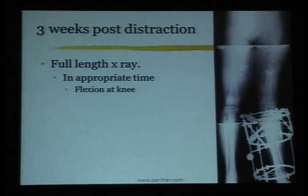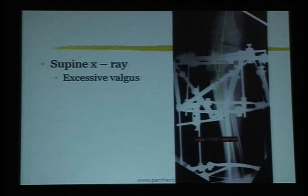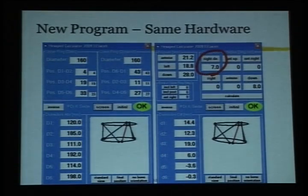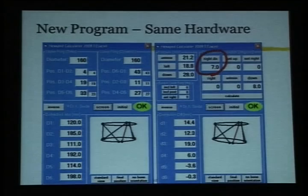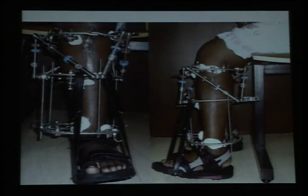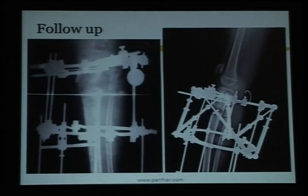We did a full-length x-ray but she had knee flexion so it was not accurate. When we did a spot film, there was excessive valgus — we had over-corrected. We went back, re-analyzed, and with the same hardware, just input new numbers into the software. We found we had over-corrected by about 7 degrees. With the same hardware and the new input, we were able to correct that over 7 days so that she was straight.